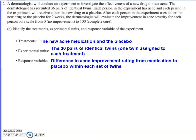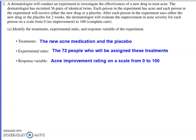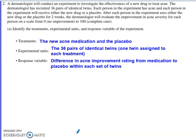Another way to interpret this: the treatments stay the same, the experimental units are the 72 people assigned to treatments, and the response variable is the acne improvement rating on a scale from 0 to 100. If the problem had simply recruited 72 people rather than 36 pairs of identical twins, this would definitely be the way to go. However, if you go with the matched pairs description, you must make sure your response variable is the difference in improvement rating within each pair.